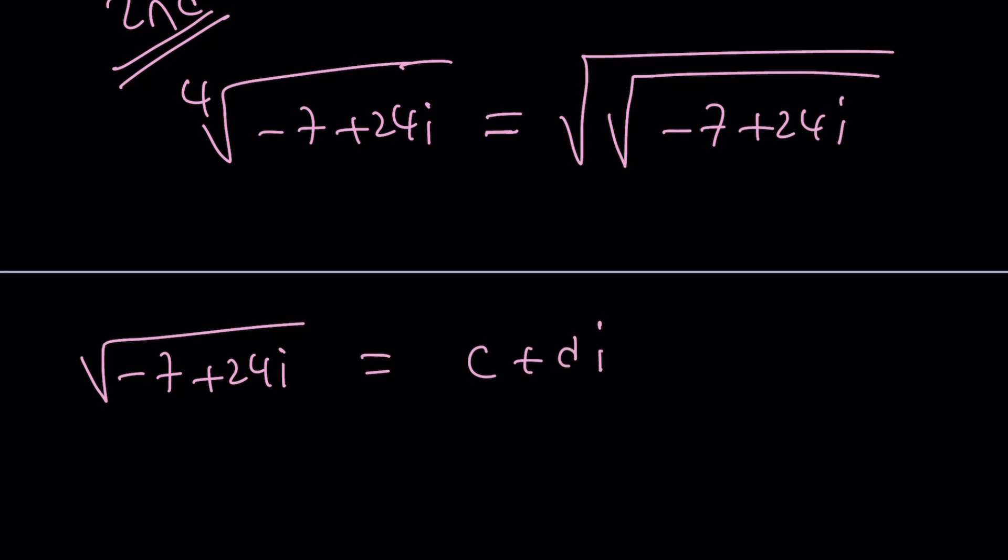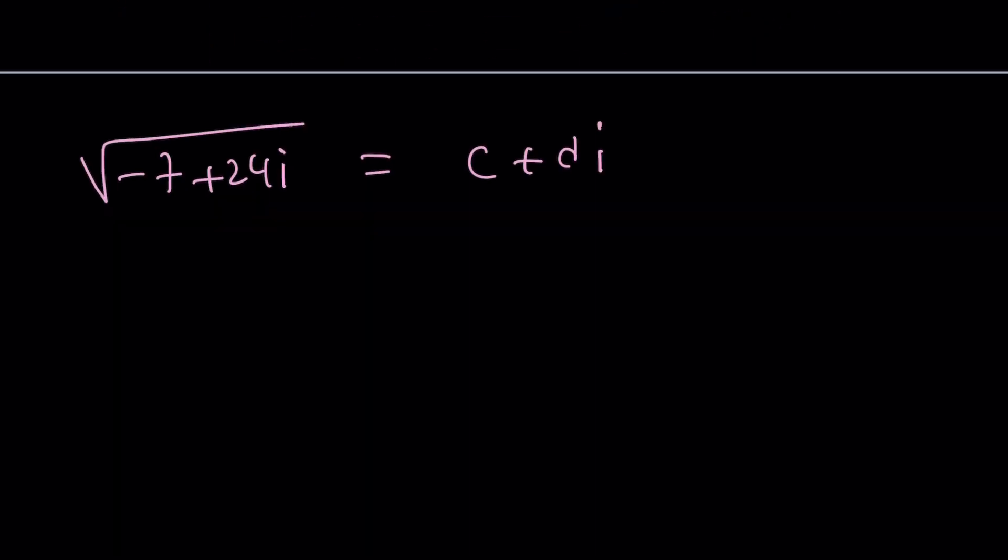You can set equal to C plus D i. I don't want to use the A plus B i again, right? Sorry about that. A plus B i. But square both sides. And you're going to get something like this. And then from here, you'll get a system of equations. What? C squared minus D squared is negative 7. And CD is 12. Now,